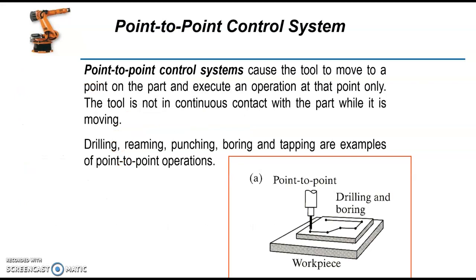In point-to-point control system, the tool moves to a point on the part and executes an operation at that point. The tool is not in continuous contact with the part while it is moving. That means when moving from one position to another position, there is no machining. It is only used for positioning and machining happens at a point only, and the tool is moving downwards just like in drilling, reaming, punching, and tapping operations.